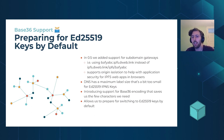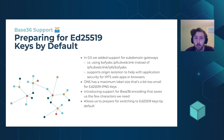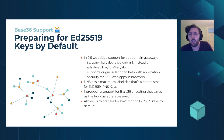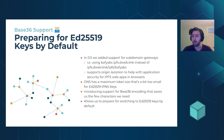Base36 support: the multiformats project including multibase allows many different representations of the same bits. We now use base36 to support elliptic curve keys as IPNS keys inside subdomains. Subdomain gateways were added in 0.5 and provide extra security in web browsers, but there's a maximum label size — we're using base36 to get around this, allowing us to use elliptic curve keys by default.